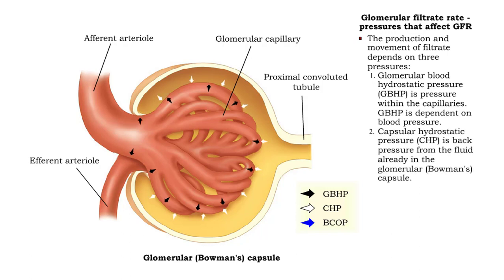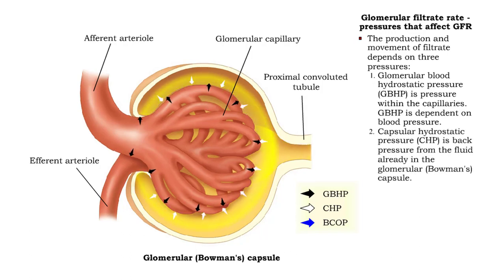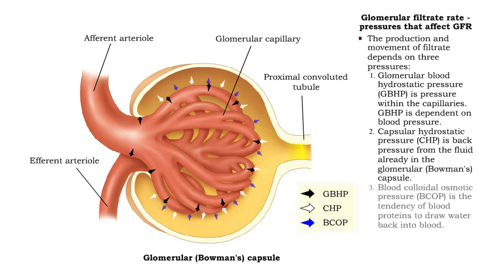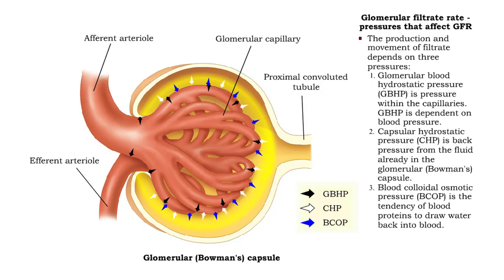Opposing glomerular blood hydrostatic pressure is capsular hydrostatic pressure, which is the back pressure exerted by fluid already in the Bowman's capsule. Also opposing glomerular blood hydrostatic pressure is blood colloidal osmotic pressure, which draws water back into the blood.